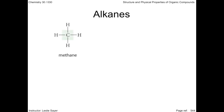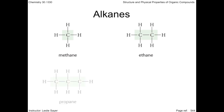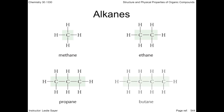Methane is the simplest alkane — one carbon and four hydrogens. The carbon connected by a single bond to another carbon gives us ethane. Propane has three carbons in a row, and butane has four carbons. The thing to notice about alkanes is that the compounds differ by a carbon and two hydrogens.